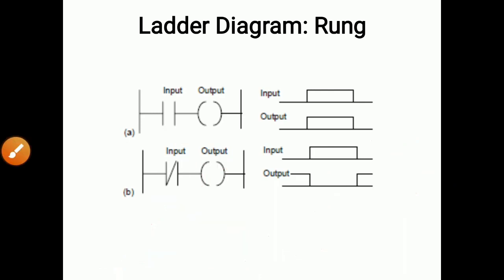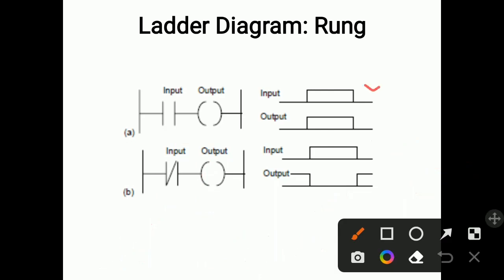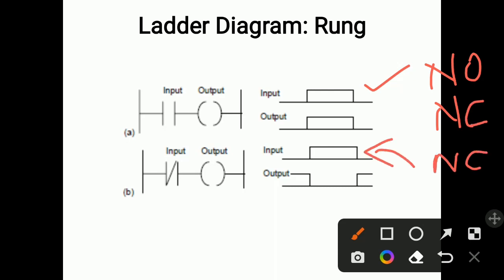So the principle is simple: when you give some input, normally open contacts get normally closed, and normally closed contacts get normally open. If you do not apply input, the initial condition will remain as it is. When you apply inputs, the conditions get changed.